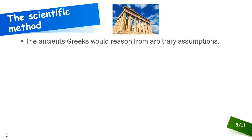Anciently, the Greeks would reason from arbitrary assumptions. So they would make an assumption about the world and then they would just reason from that point, because the Greeks were all really big into reason, logic, philosophy, that type of thing. So that seemed to work really well for them.